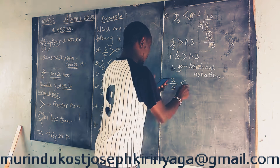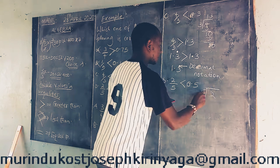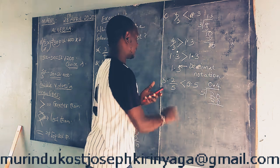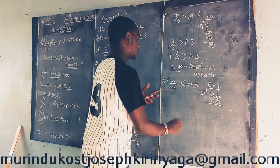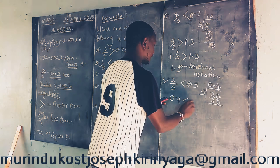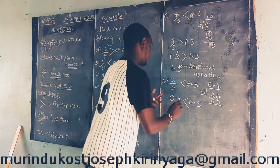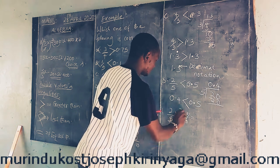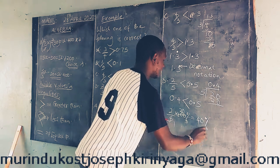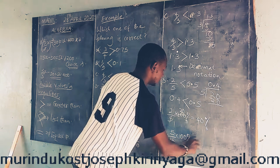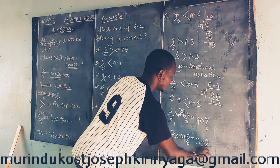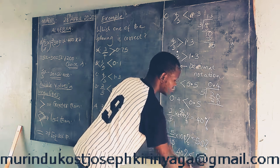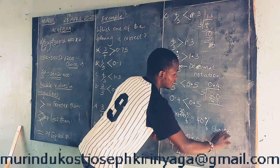Choice D: 2 over 5 is greater than 0.5. If you divide, 2 over 5 is 0.4 because of 20, so 0.4 is less than 0.5. Even when you change this as a percentage: 2 over 5 times 100 percent equals 40 percent, and 5 over 10 times 100 percent equals 50 percent. So 40 percent is less than 50 percent. The correct choice was choice D — the statement should read 2 over 5 is less than 0.5.